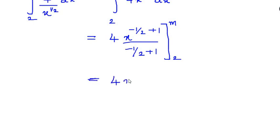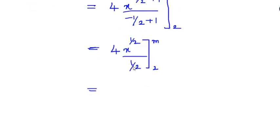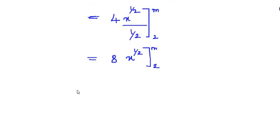Further solving this we get 4 x to the power of half over, negative 1 over 2 plus 1 is again 1 over 2, then writing the limits. Here we are going to divide the numbers: 4 divided by 1 over 2 gives you 8, and x stays the same with the limits from 2 to m.